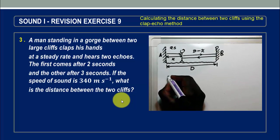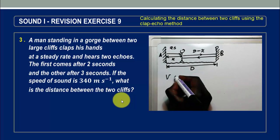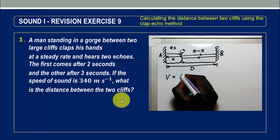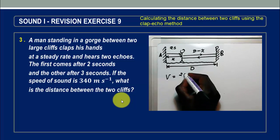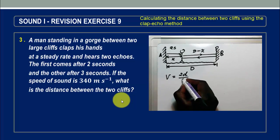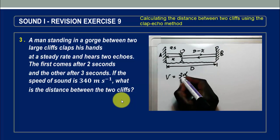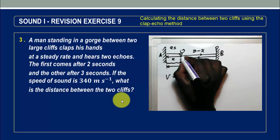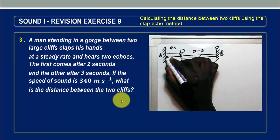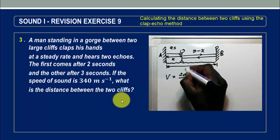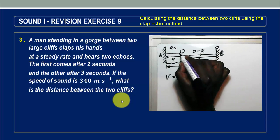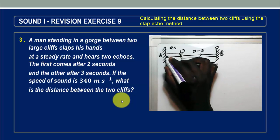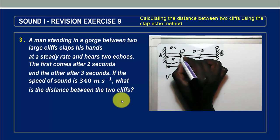Now, to calculate the speed of sound in air using the clap echo method, we use this important equation: V is equal to 2D over T, where D is the distance from where the person is clapping to where the wall is, and T is the time taken for sound to travel from where the person is, hit the wall, and then come back.